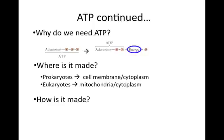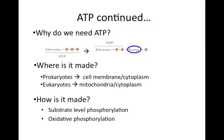ATP can be produced by three different means. It is produced by substrate-level phosphorylation in the Krebs cycle when a phosphate is transferred from a substrate to ADP. It is produced by oxidative phosphorylation in the electron transport chain when ATP is generated by the passing of electrons from one electron carrier to the next until they are finally accepted by oxygen. And it is produced by photophosphorylation during photosynthesis. Oxidative phosphorylation is the most efficient means of generating ATP.